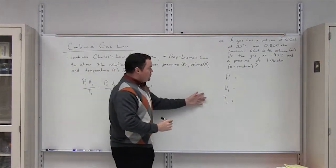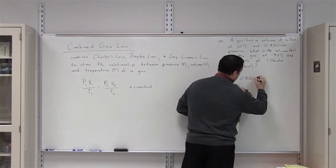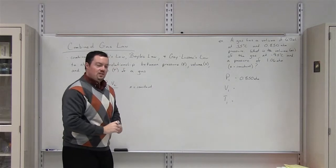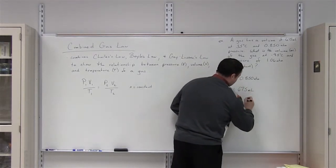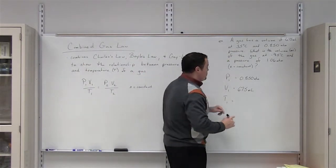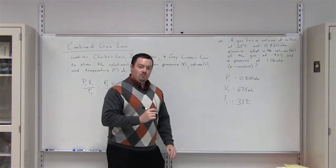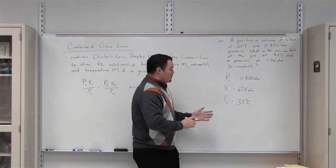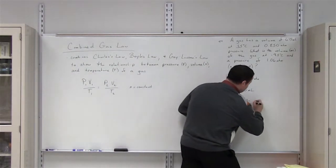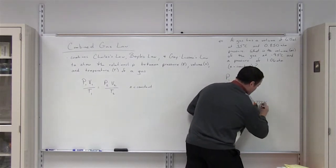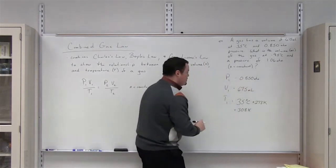Under condition 1, the problem gives us a pressure of 0.850 atmospheres, a volume of 675 milliliters, and a temperature of 35 degrees Celsius. However, we cannot use temperature in degrees Celsius for gas problems — we must convert to Kelvin first. Adding 273 to 35 degrees Celsius gives us a temperature of 308 Kelvin.